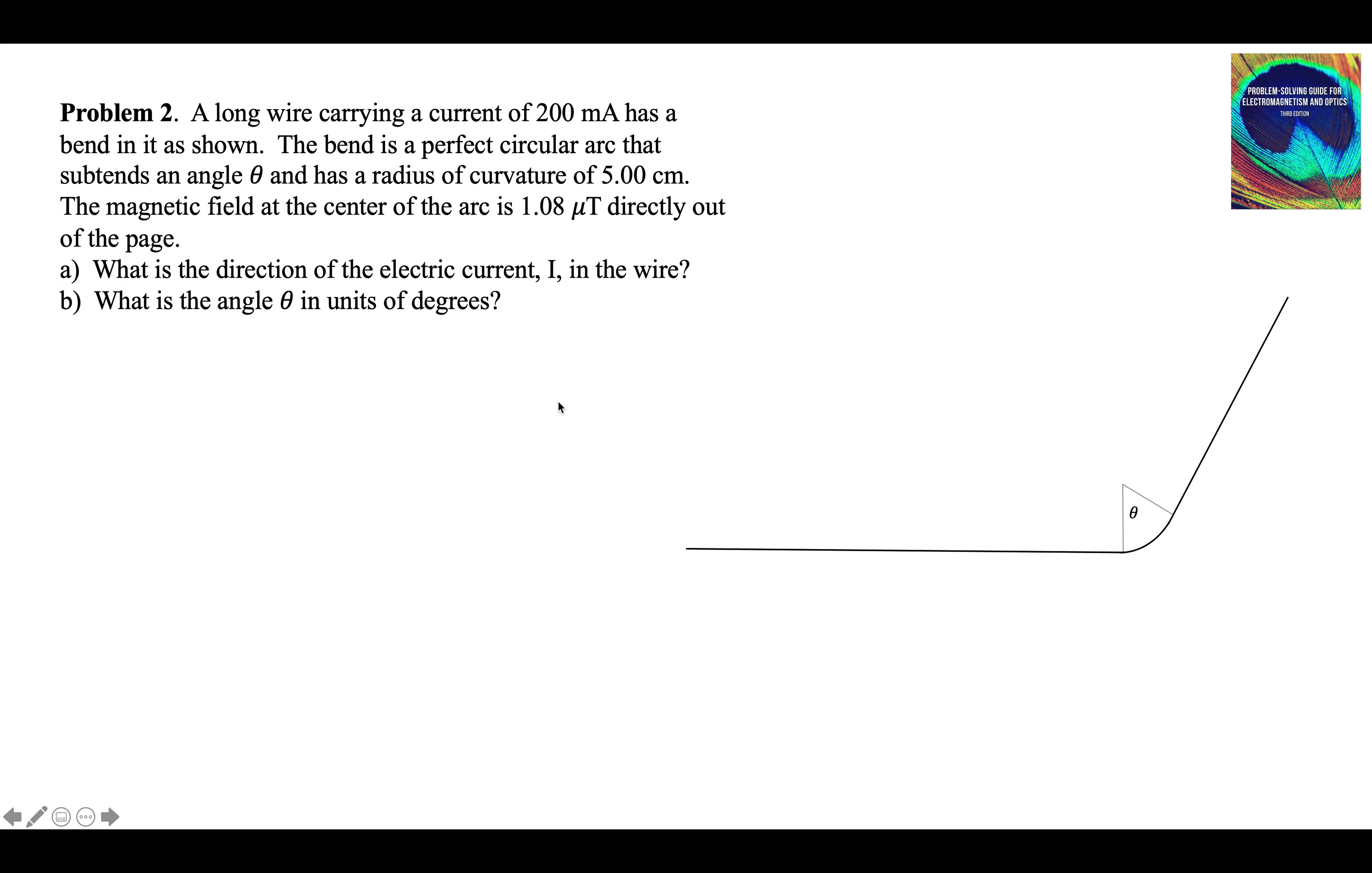Problem 2 states, a long wire carrying a current of 200 milliamps has a bend in it, as shown. The bend is a perfect circular arc that subtends an angle theta. We can see it right here in the diagram. It has a radius of curvature of 5 centimeters. The magnetic field at the center of the arc is 1.08 microtesla directly out of the page.